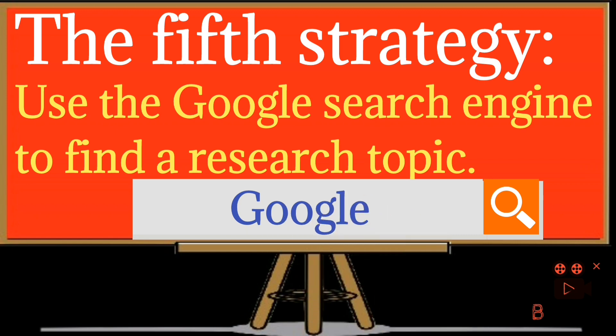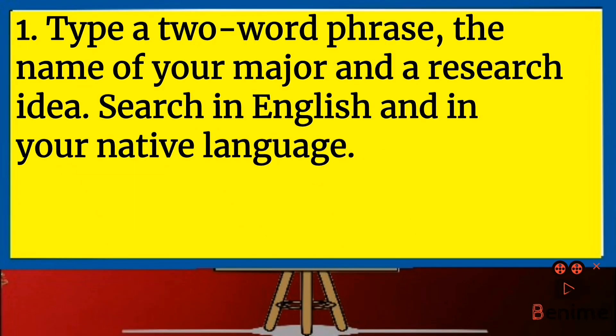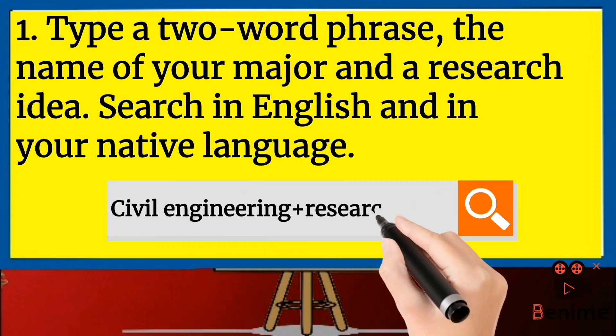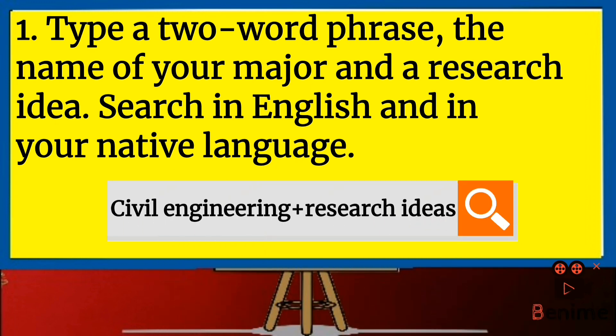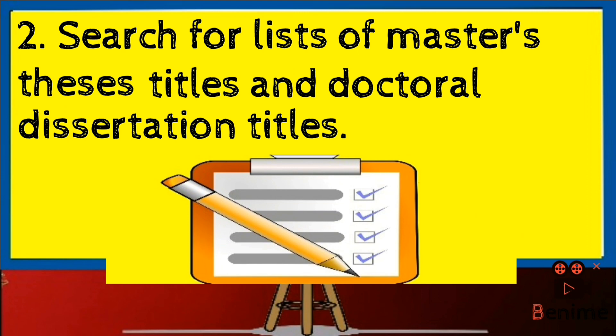Fifth strategy: use the Google search engine to find a research topic. Number one: Type a two-word phrase, the name of your major and a research idea. Search in English and in your native language. For example, if you are a civil engineer, write 'civil engineering research ideas.' Number two: Search for lists of master's theses titles and doctoral dissertation titles. Once you read the headlines, you can come up with a new topic.